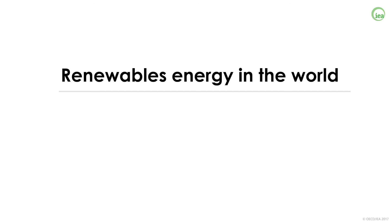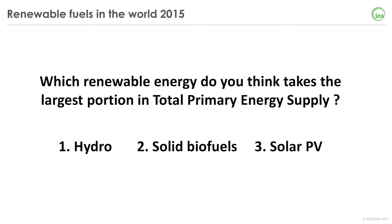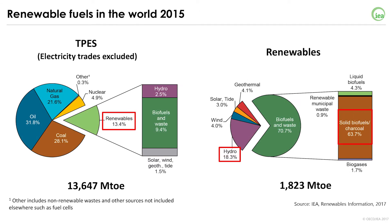I would like to summarize the position that renewable energy plays in the global context. Before we start, I would like to give you one quiz. Which renewable energy do you think takes the largest portion in total primary energy supply? The answer is solid biofuels. At the world level, current statistics suggest that renewables account for 13.4% of total primary energy supply, or TPES. And most of this is made up of solid biofuels, which is usually used to generate heat directly, not to produce electricity. Solid biofuels account for around 64% of total renewables, and non-OECD countries are the principal users because of heavy non-commercial uses such as cooking and heating in the residential sector.